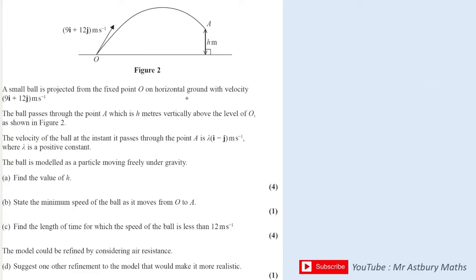It says a small ball is projected from the origin on horizontal ground with velocity 9i + 12j. The ball passes through A, which has h metres vertically above the ground, and when the ball does reach A, it is travelling at velocity of λi - j, where λ is a constant. It says find the value of h.